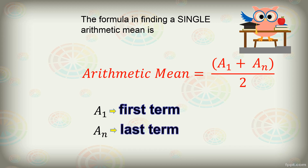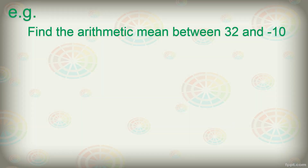Let us see how this formula works. Let us have this problem: Find the arithmetic mean between 32 and negative 10. In this problem, we are plainly asked to look for a single arithmetic mean. So this is what our sequence will be: 32, blank, negative 10. We are to find out what number goes in between these two.